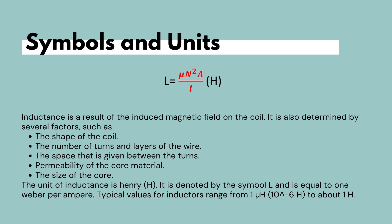The inductance is determined by several factors as the equation implies: the shape of the coil, the number of turns and layers of the wire, the space between the turns, the permeability of the core material that the wire has been wound upon, and the size of the core — that is, the length of the core. The unit for inductance is the henry, which is equal to one Weber per ampere. The symbol for inductance is the letter L, and typical values for inductors range from one microhenry to about one henry.